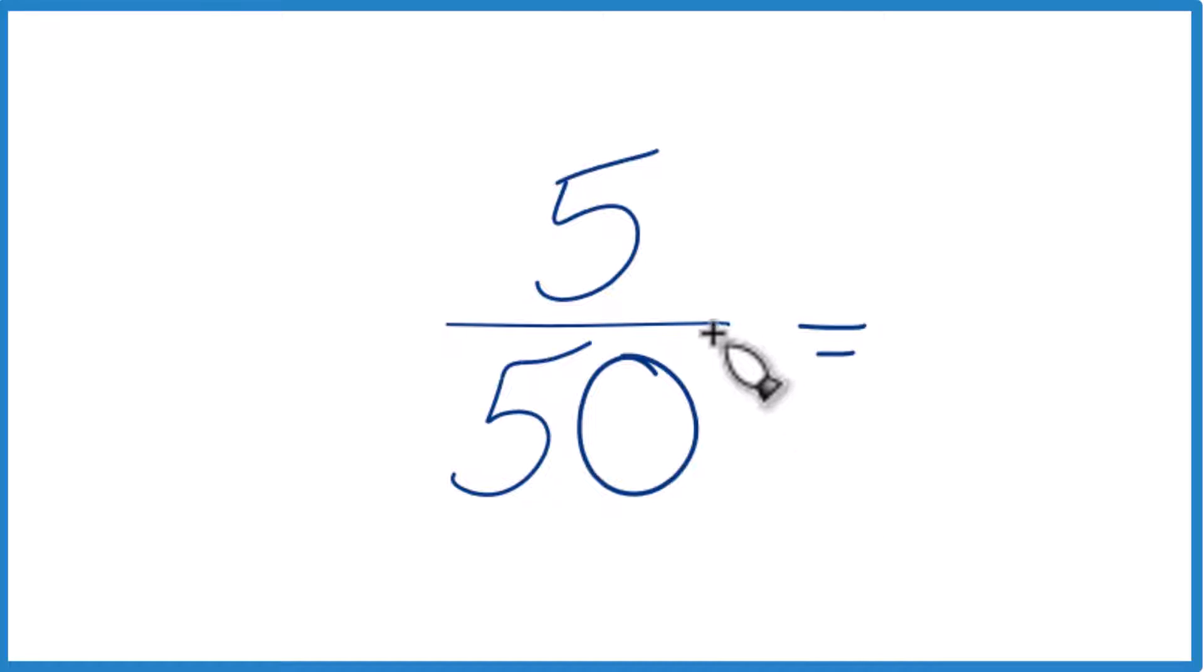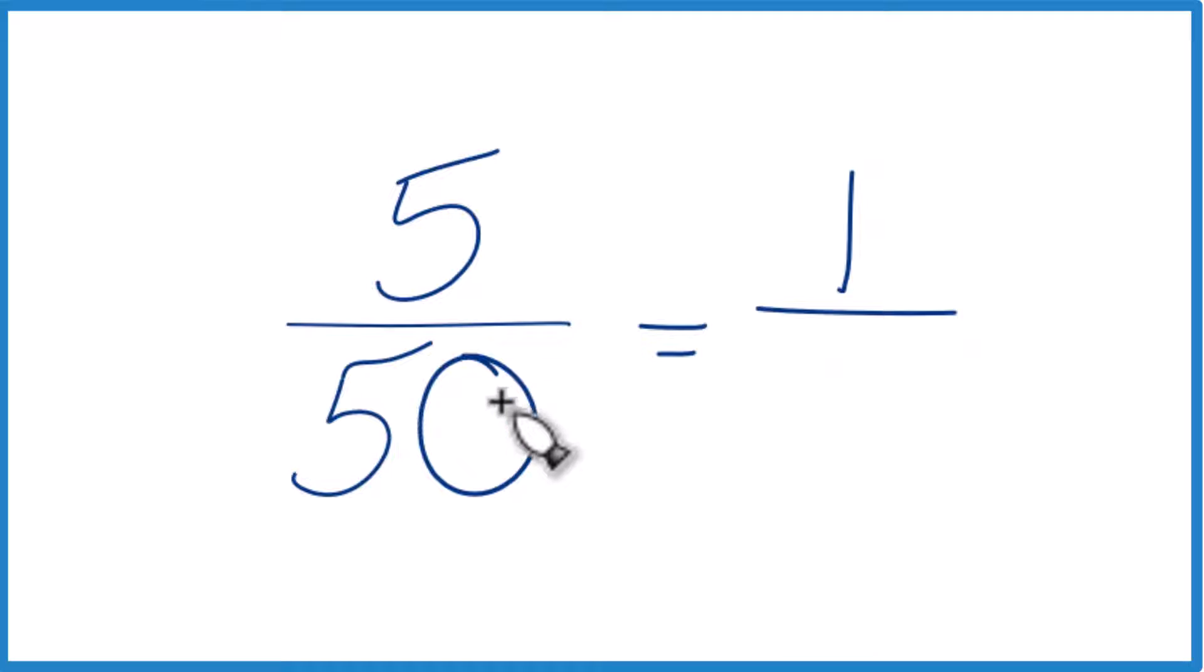we could simplify this further because 5 divides into itself and 50. So 5 divided by 5, that's 1. And then 50 divided by 5, that would be 10.